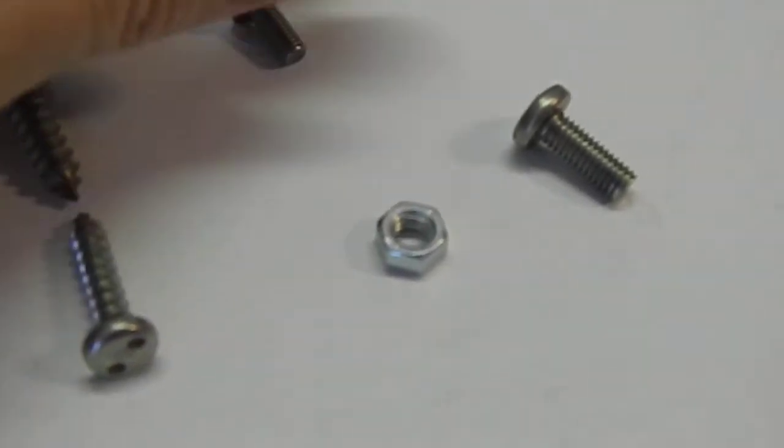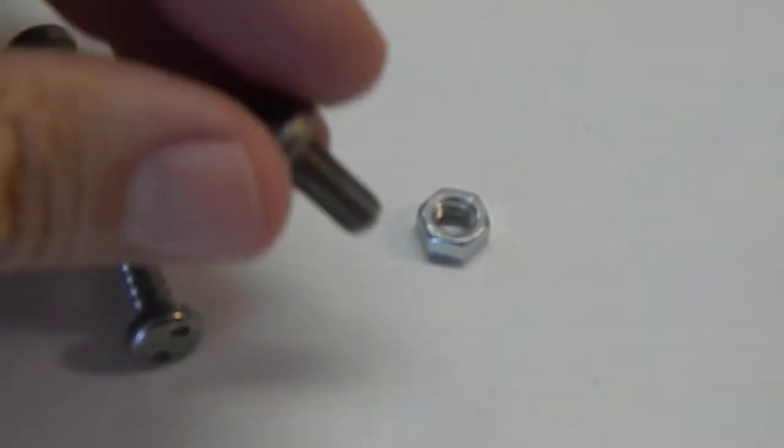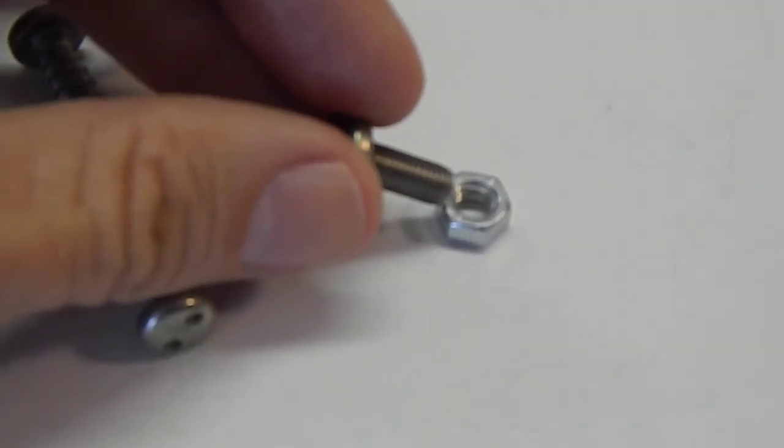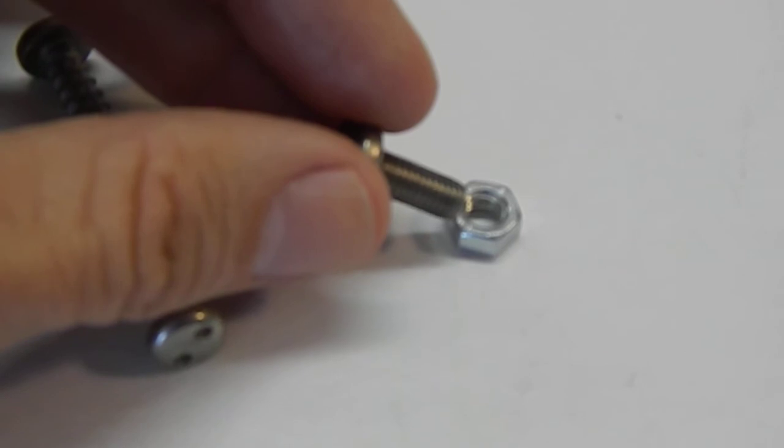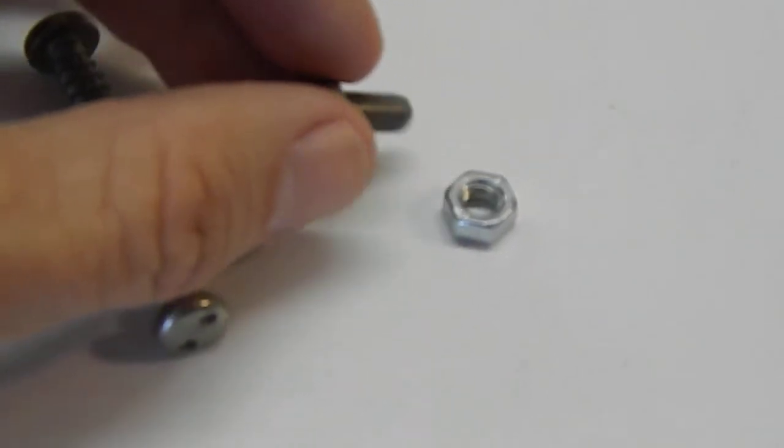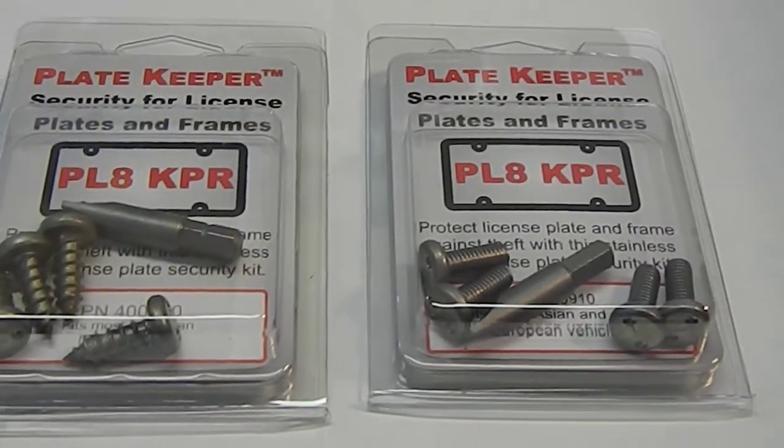If you have a hardware store nearby, you can also take one of your screws and try it in some nuts on their shelf to see what size you need. Get that information to us and we'll make sure you get the correct kit for your car.